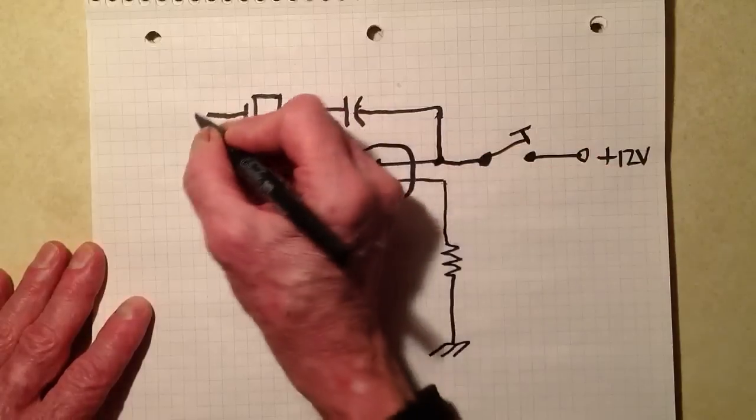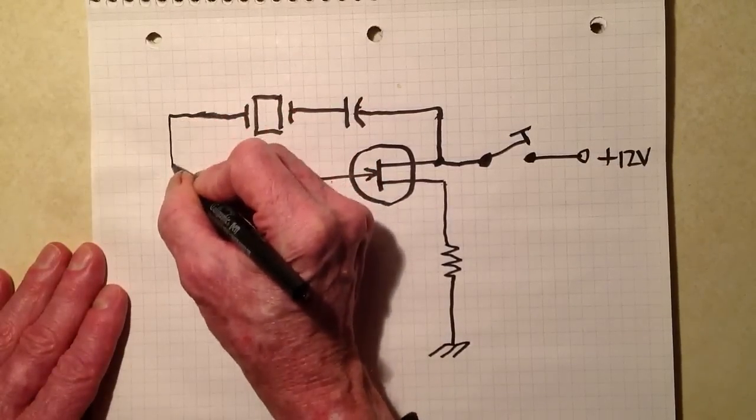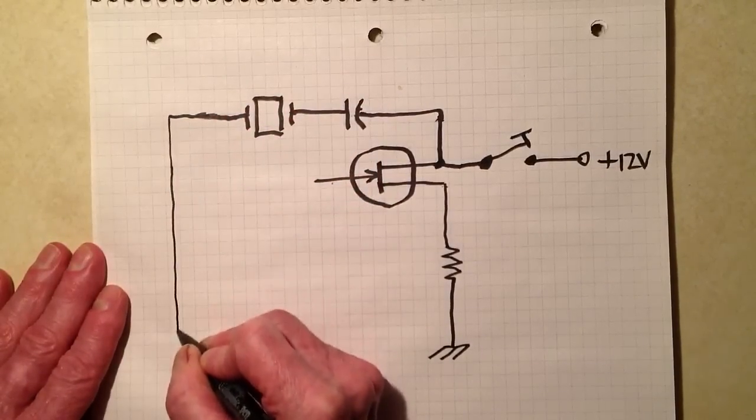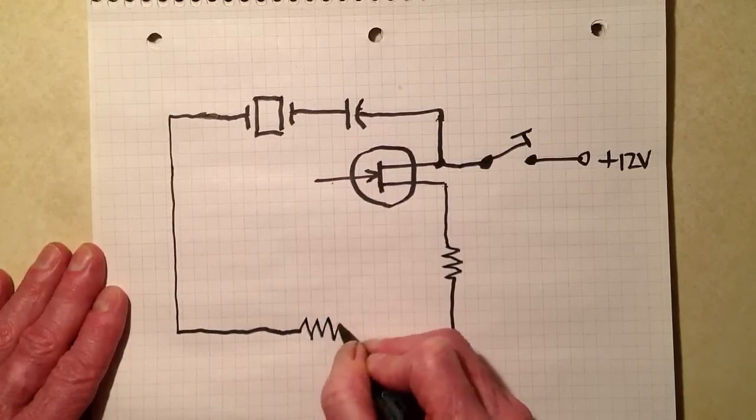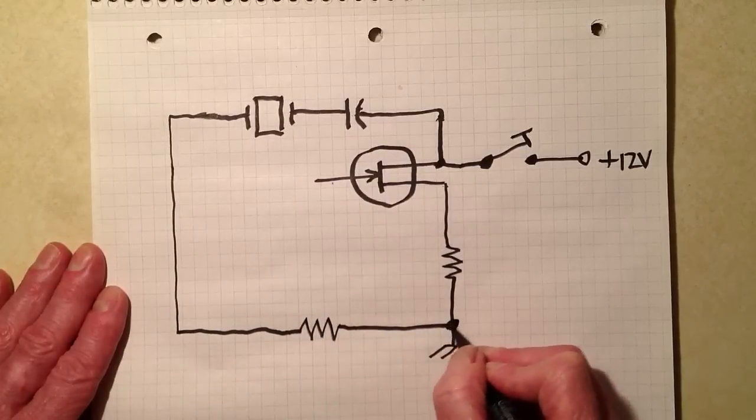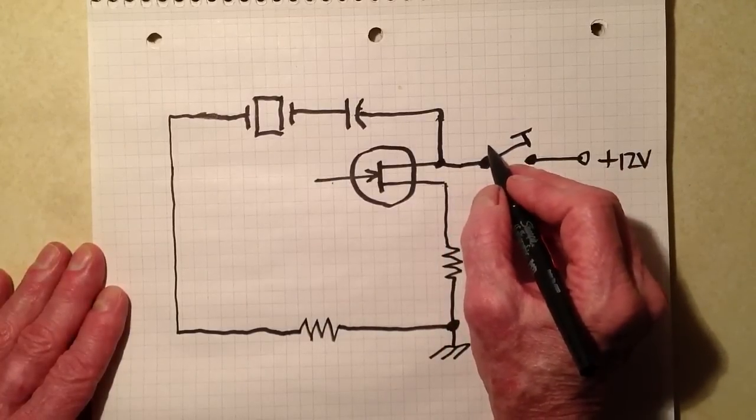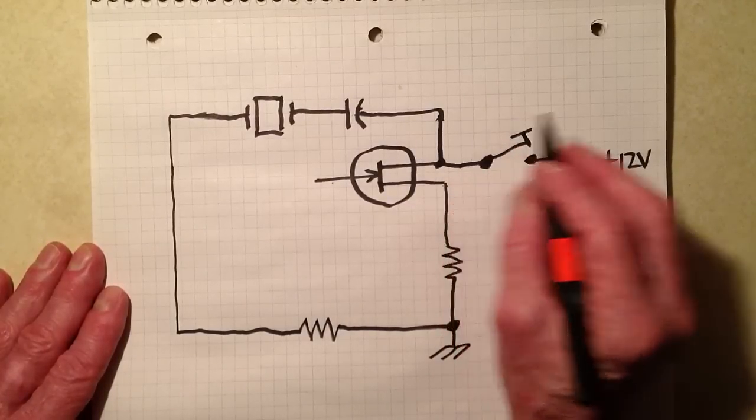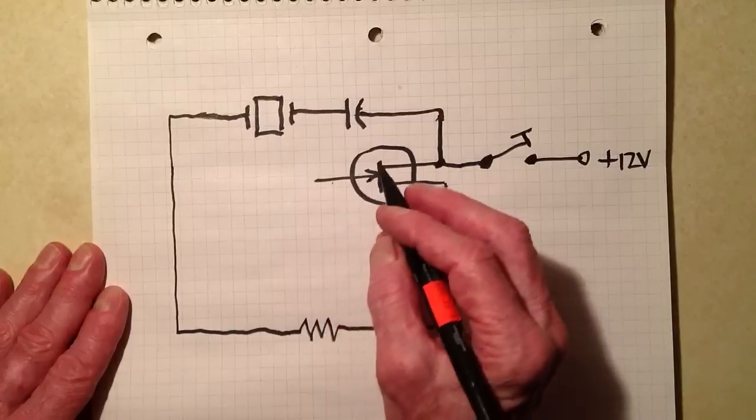This crystal goes around through a resistor to ground, like this. So, when you close the key, what you get here is a situation where you can have feedback from the crystal.